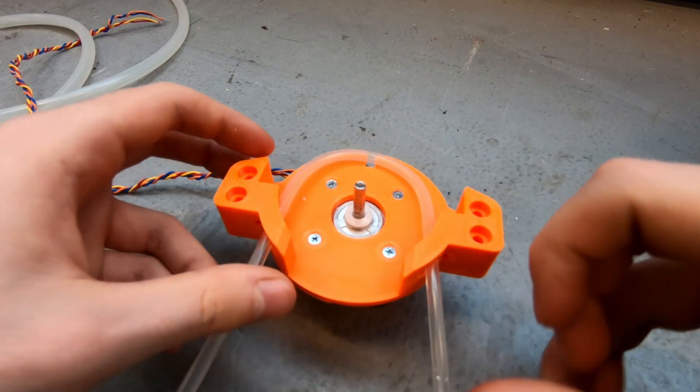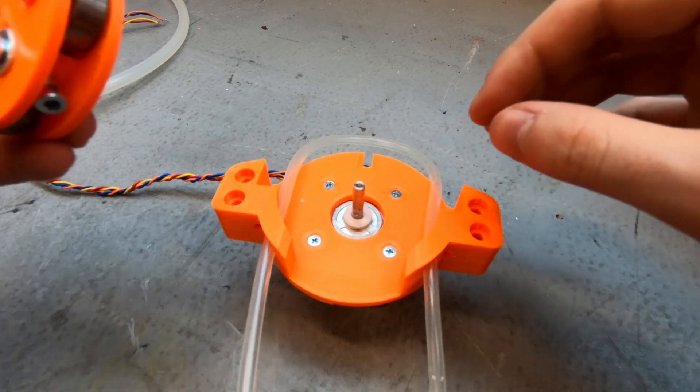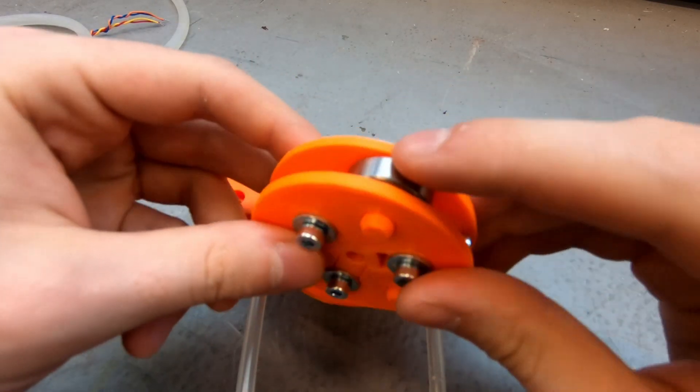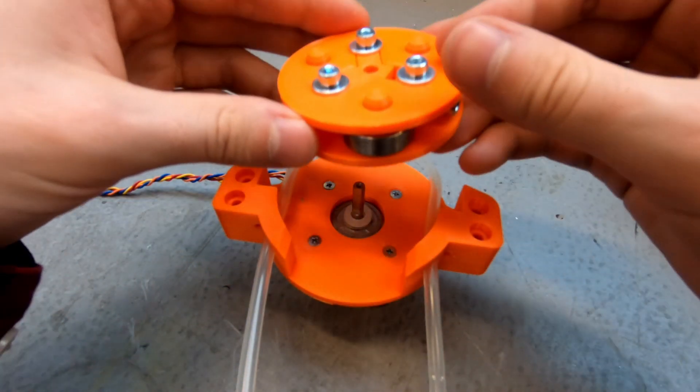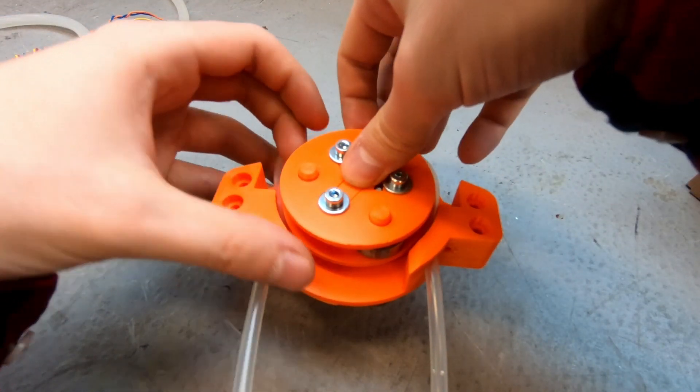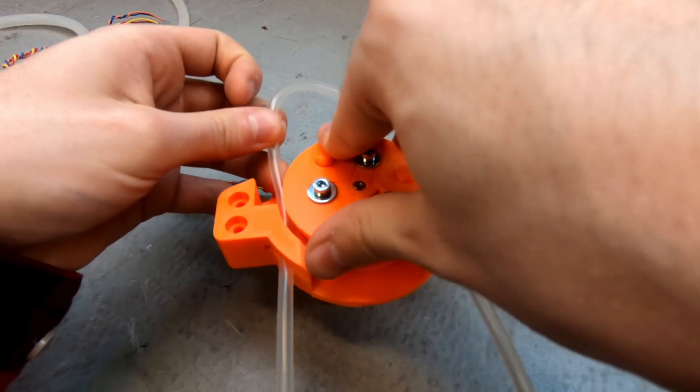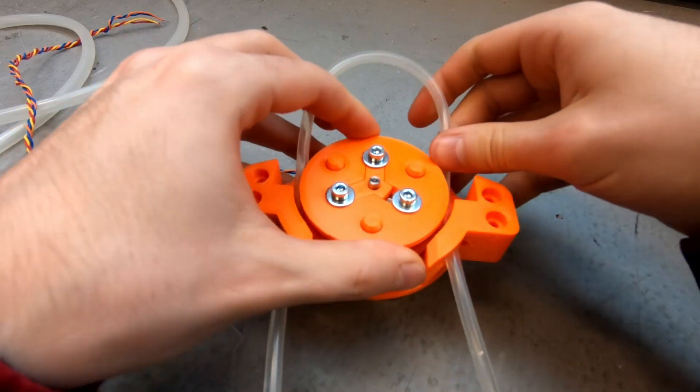And then you can add the rotor. This is a rotor that has three ball bearings. It's going to be acting as our rollers. We can push it down onto our motor axle like so.